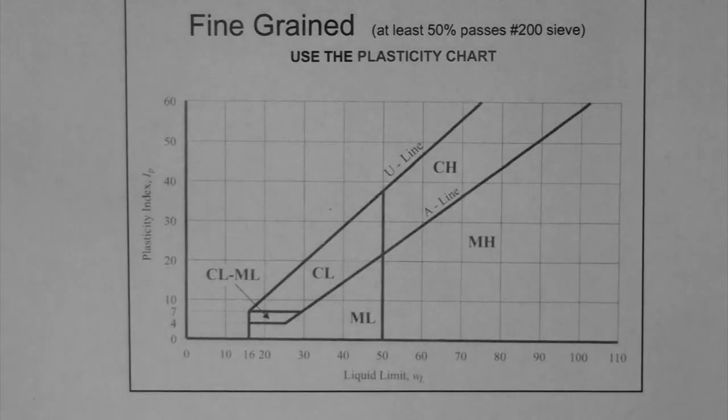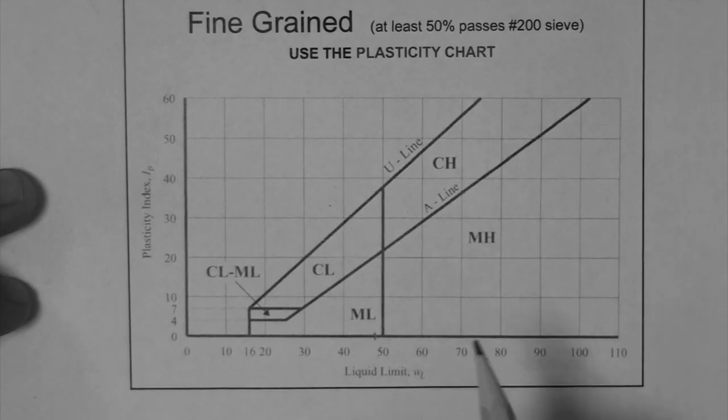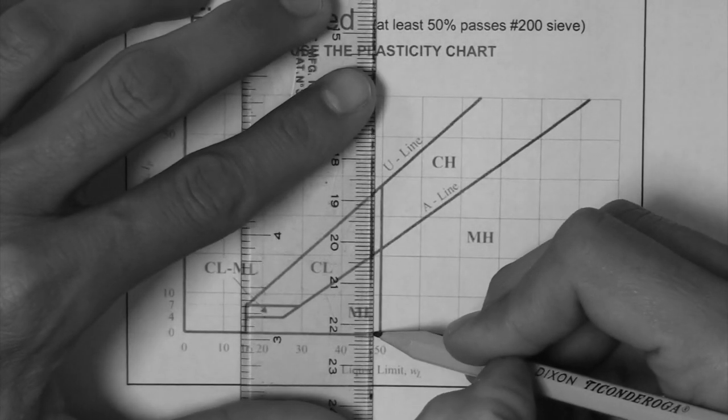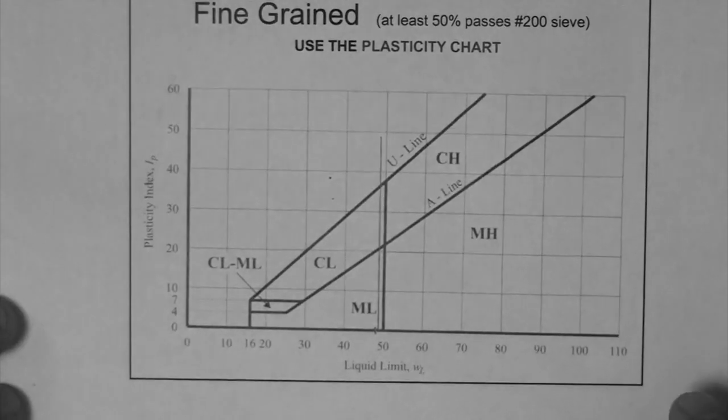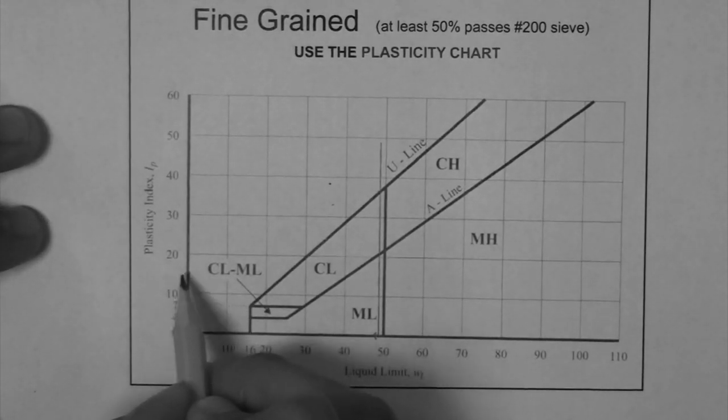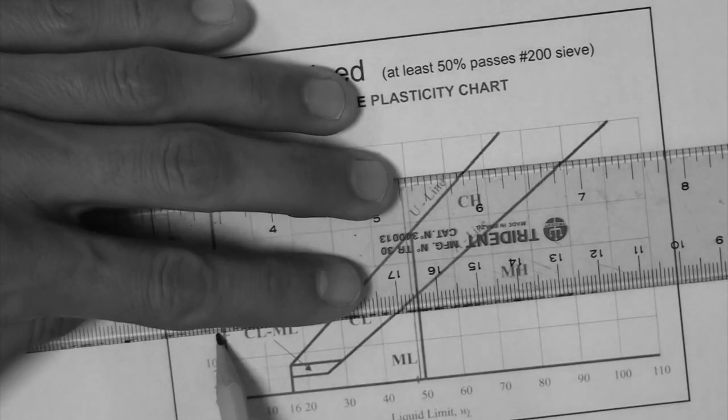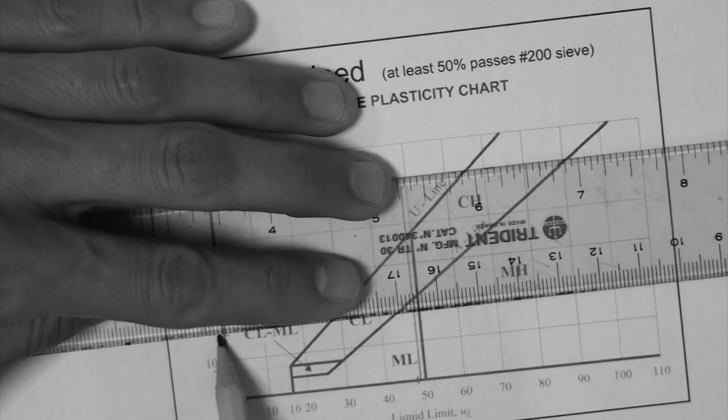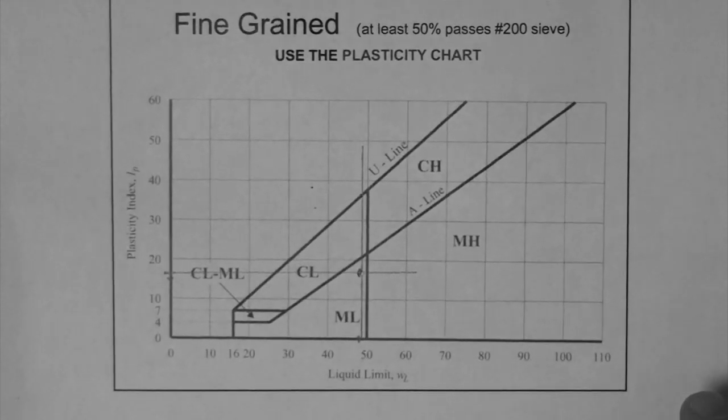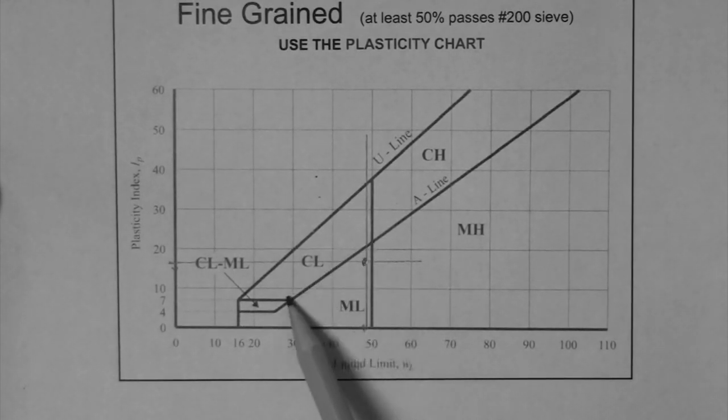So, our liquid limit was given as 49. This is 50, 49 is here. We can draw a vertical line there. And our plasticity index is 16. This is 15, 16 is there. So, our point lands right there.